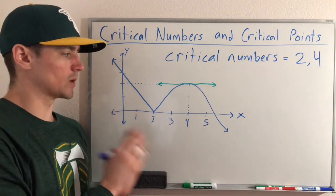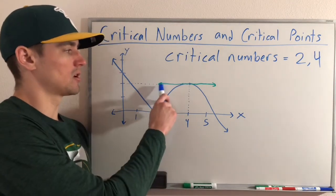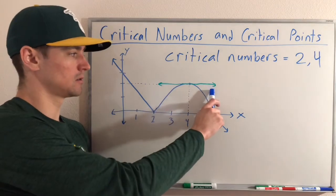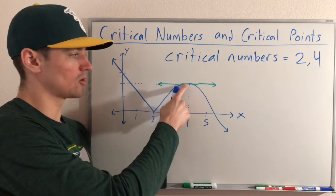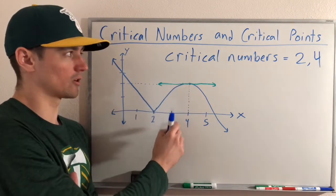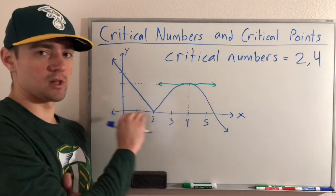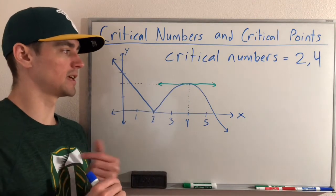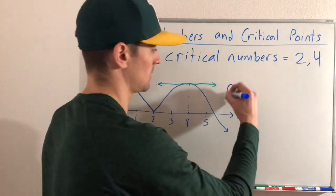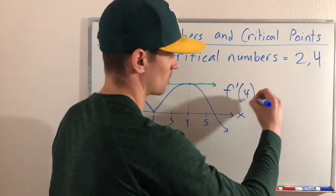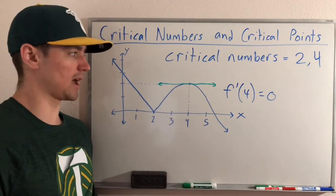Taking a quick second to talk about what the graph looks like at these two points: I've drawn the tangent line to our function at the local maximum. When we're at our critical number or critical point, our function has a tangent line with a flat slope. The tangent line being flat is the same as saying the derivative equals zero — we can see that f prime of 4 equals 0 because the slope at that point is zero, since it's a flat line.